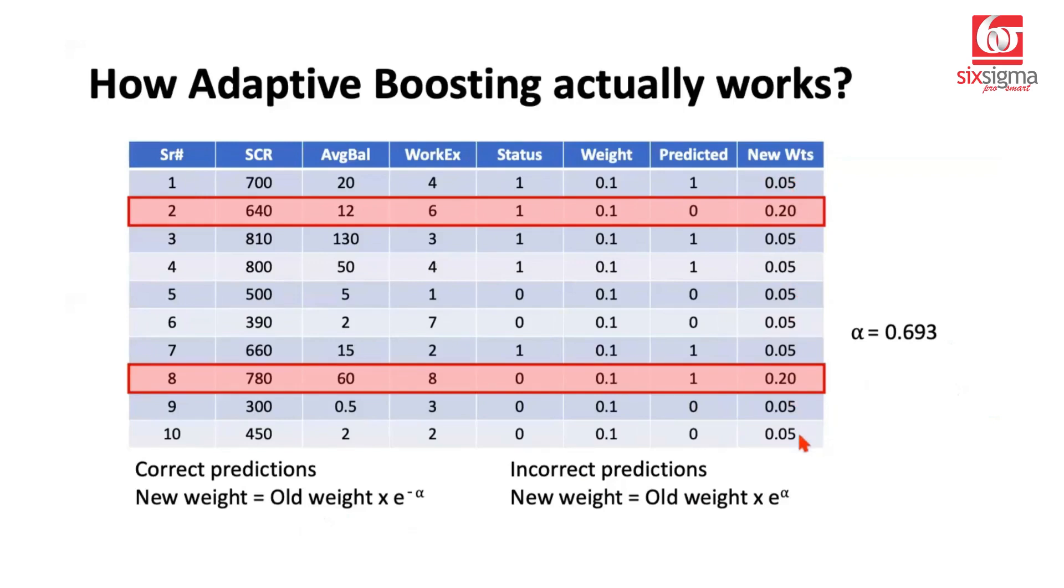Now if we do these calculations, taking old weight as 0.1 and alpha is 0.693, we can do this calculation to come up with the new weights. There's one more step here to normalize these weights because right now these weights are not adding up to one. So we are not able to assign it a relative weightage. We want the misclassified values to be assigned a relatively higher weightage. In order to be able to do that normalization, we'll have to do a sum total of this column and divide each value by the sum total. That will give us the normalized weights which will add up to one.